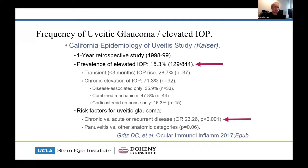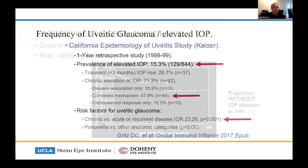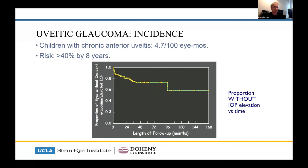Most studies are based on clinics, not epidemiology, and glaucoma is very often defined poorly. Chronic uveitis carries a much higher risk than recurrent disease — odds ratio of 23, quite spectacular. Many are combined mechanisms: a bit of open angle, a bit of closed angle. In children, if you've had uveitis for eight years, you've got more than a 40% risk of IOP elevation, whereas across the board it's probably only about 15%.